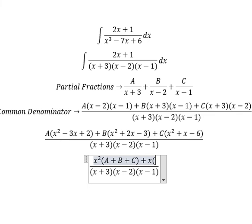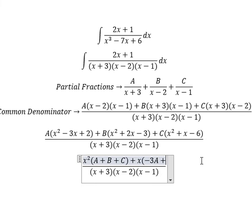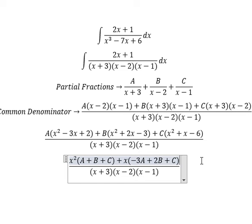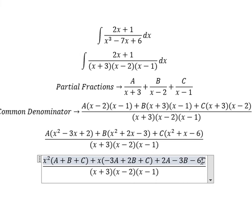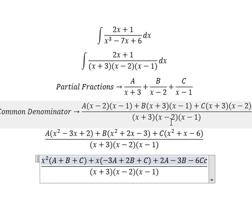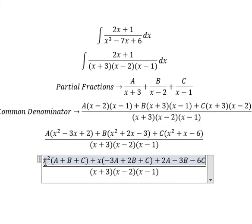Now we need to arrange based on the terms of s. For s², we have A plus B plus C. For the constant term, we have 2A minus 3B minus 6C. Looking carefully, we see that there is no s³ term, which means A plus B plus C equals zero.